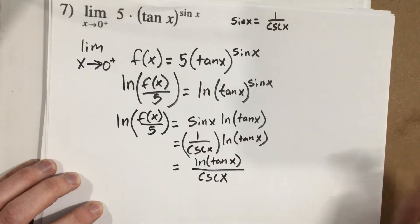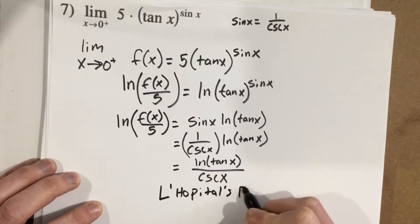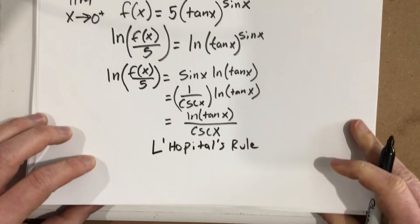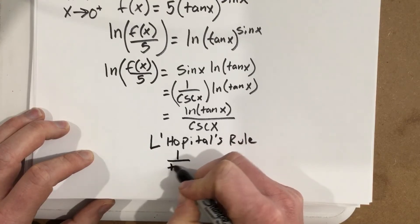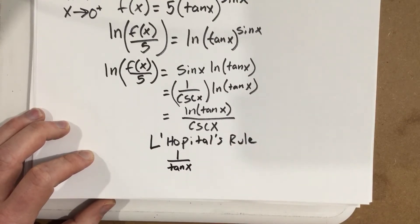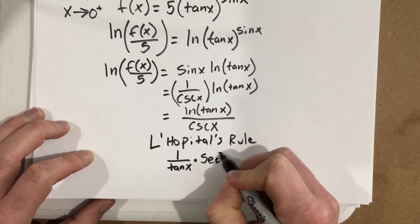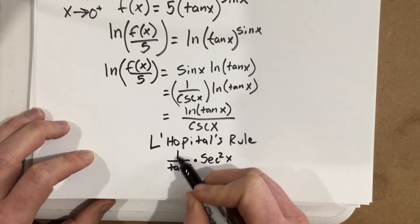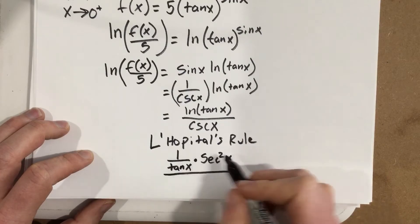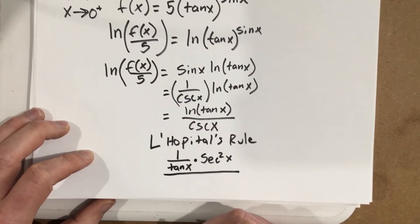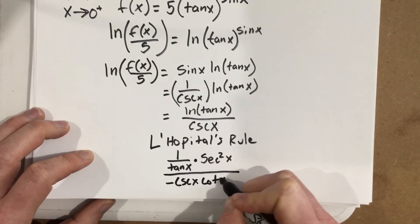Applying L'Hôpital's rule: the derivative of the top, ln(tan(x)), is 1/tan(x) times the derivative of tan(x) by the chain rule, which is sec²(x) — giving sec²(x)/tan(x). The derivative of the bottom, csc(x), is negative csc(x)·cot(x).